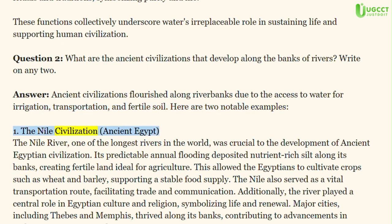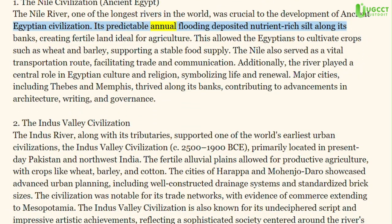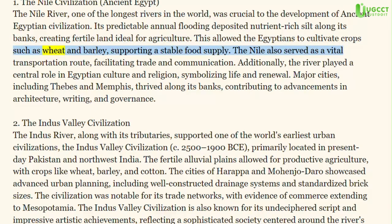1. The Nile Civilization — Ancient Egypt. The Nile River, one of the longest rivers in the world, was crucial to the development of ancient Egyptian civilization. Its predictable annual flooding deposited nutrient-rich silt along its banks, creating fertile land ideal for agriculture. This allowed the Egyptians to cultivate crops such as wheat and barley, supporting a stable food supply. The Nile also served as a vital transportation route, facilitating trade and communication.